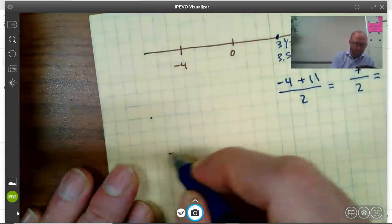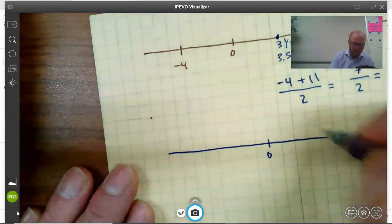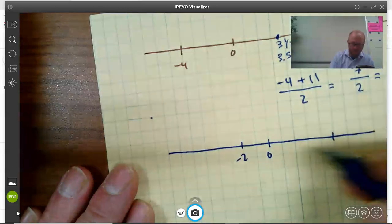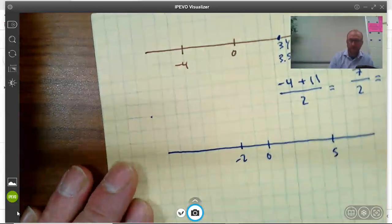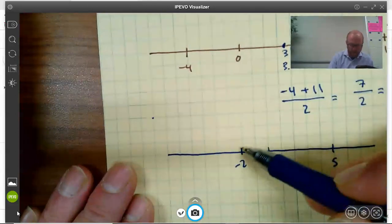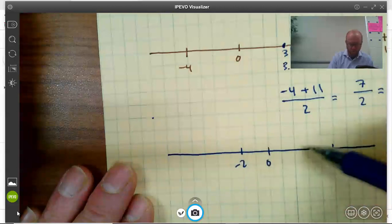I can do that with any other pair of numbers. Let's find something else. Negative 2 and 5. So the halfway point, they are 7 apart. So it's 1, 2, 3, 4, 5, 6, 7 apart. So 3.5, which is 1.5 in the middle. 1, 2, 3.5.